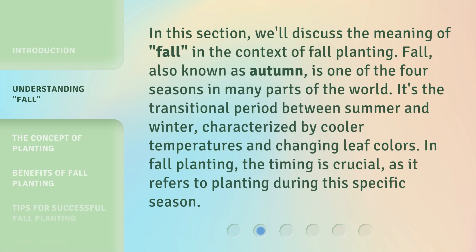In this section, we'll discuss the meaning of 'fall' in the context of fall planting. Fall, also known as autumn, is one of the four seasons in many parts of the world. It's the transitional period between summer and winter, characterized by cooler temperatures and changing leaf colors. In fall planting, the timing is crucial, as it refers to planting during this specific season.